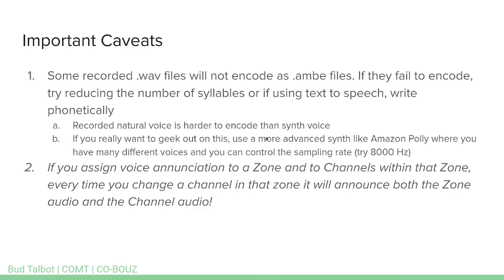If you really want to geek out, try more advanced synths. Amazon Polly is one where you have a ton of different voices to choose from, and most importantly, you can control the sampling rate. Knock that sampling rate down to 8,000 Hz instead of the default 32,000 or whatever it is — that controls the frequency range in that WAV file. Note that Polly outputs MP3, so you'll need to convert that to WAV, then let the radio convert the WAV to AMBE. You need a very limited frequency range in the file to successfully encode.